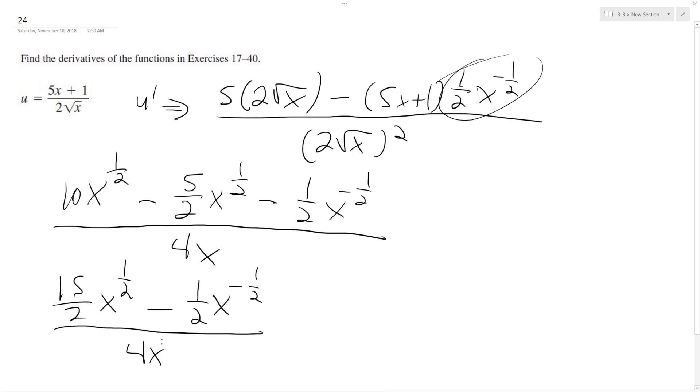So this is the same thing. This is like subtracting 1 from up there. So what I can make this out to be is 15 over 4, x to the negative 1 half, minus 1 over 8, x to the negative 3 halves.